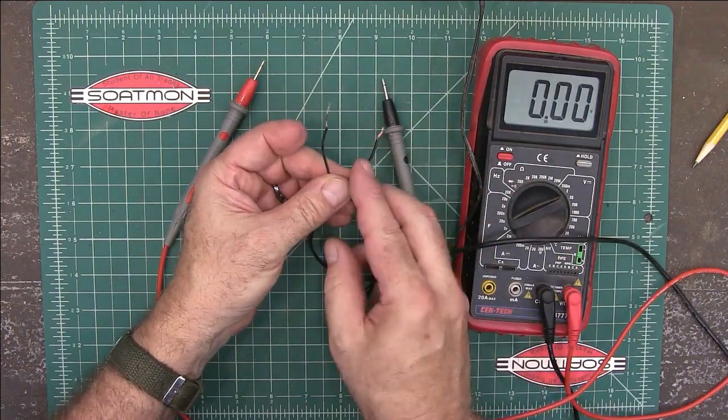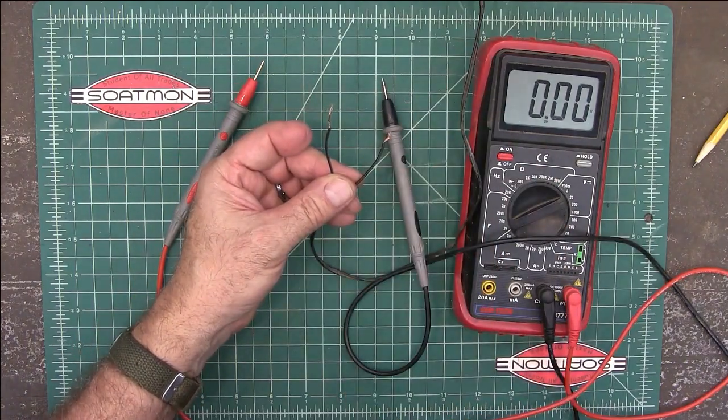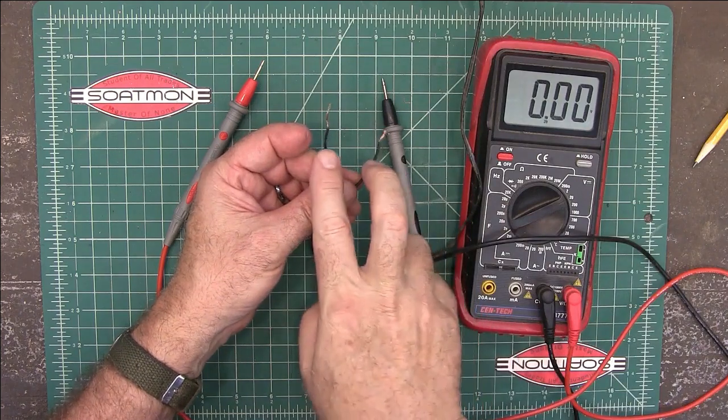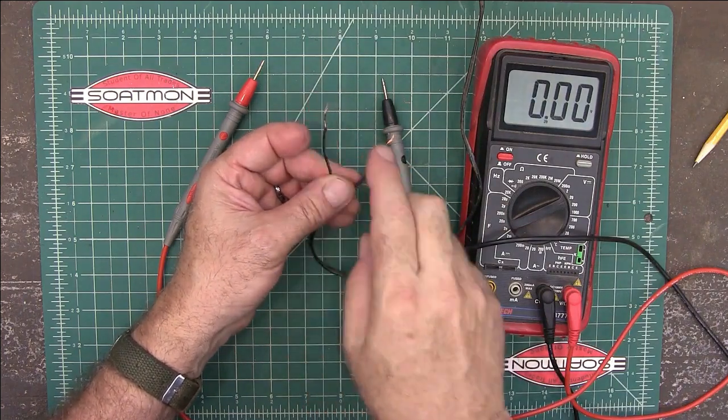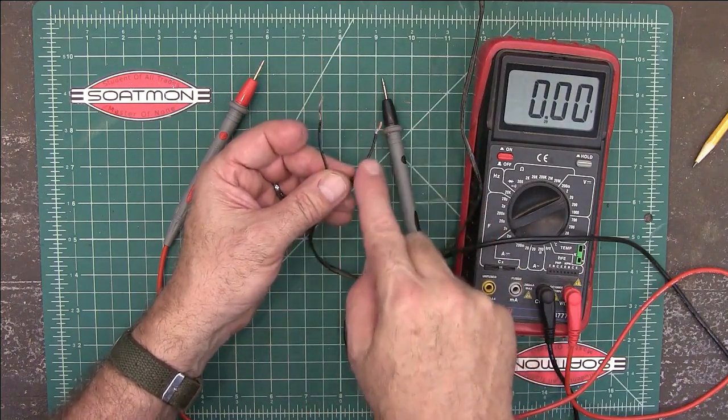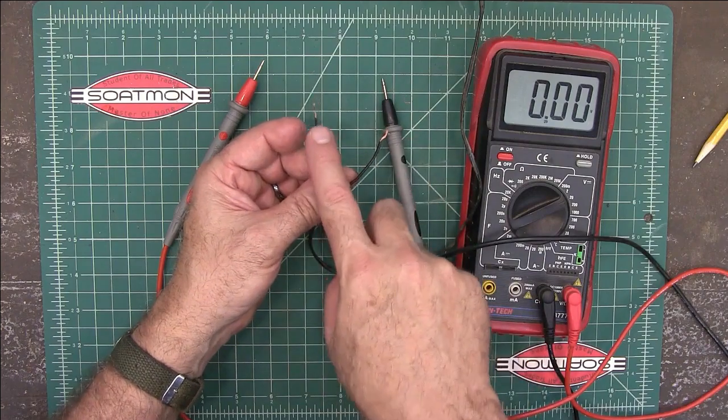So if you're hooking up to your project and it's calling DC, it almost always has to be hooked up correctly. In other words, positive to positive and negative to negative. So this is the negative side, and this is going to be my positive side.